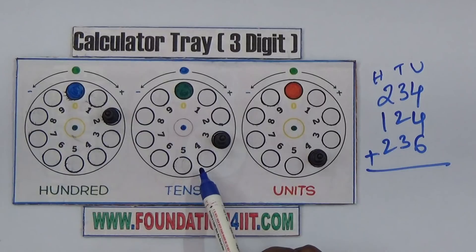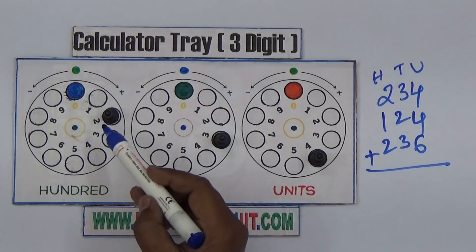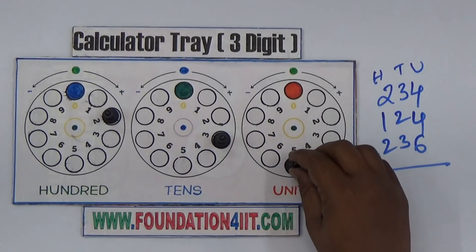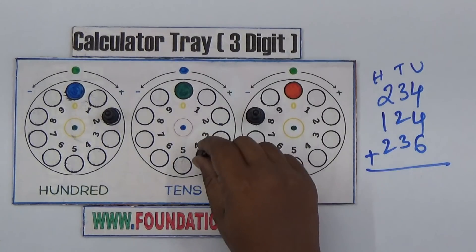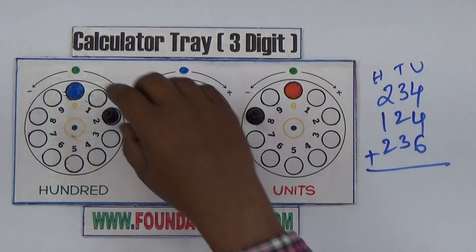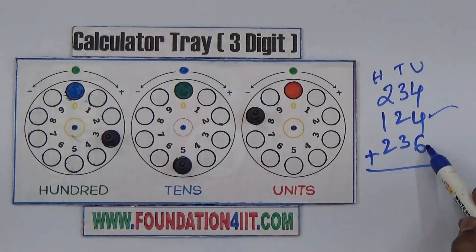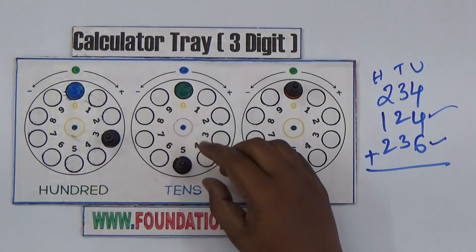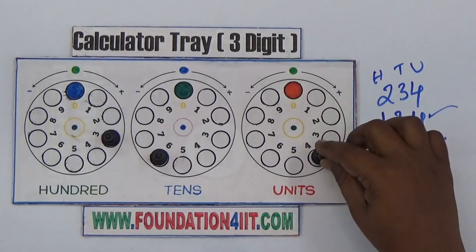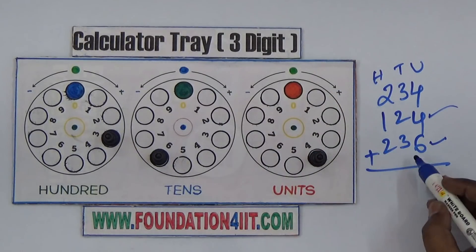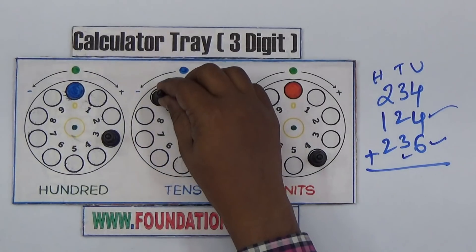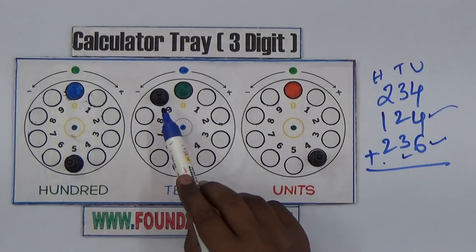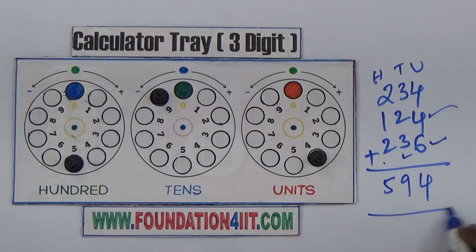The rule is: whenever a circle comes to 0, the previous circle should move to the next position. Now 234 is set. Next, adding units 6 from 124: counting 1, 2 — it crosses 0, so immediately move the tens forward, then continue 3, 4, 5, 6. Then tens digit 2: count 1, 2. Then hundreds digit 1: just 1 step. Next number 236: units 6, tens 3, hundreds 2, counting carefully. Final result is 594.